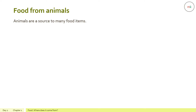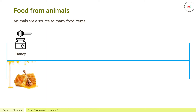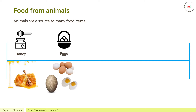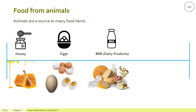Have you seen the bees who collect nectar from flowers, convert them into honey, and store it in their hives? We collect the stored food made by the bees and we call it honey. We get eggs from hens, ducks, emu, and other birds.